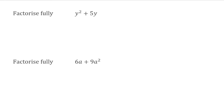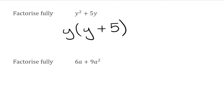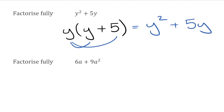For the first harder question, we have y squared plus 5y. We're not going to factorise any number parts because there's effectively a 1 in front of that y squared. Looking at the terms, I've got y squared and y — we're dealing with the base of y. When we have common bases, we always take the smallest power on the outside of the bracket. The smallest power is just y. Inside the bracket: y squared is y multiplied by y, then plus, and 5y is y multiplied by 5. Checking by expanding: y times y is y squared, and y times 5 is 5y — back to where we started.